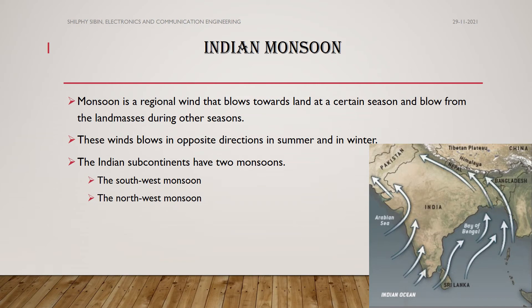In another video, we will talk about the Indian Monsoon. The Monsoon is a regional wind that blows towards land at a certain season and blows from the landmass during another season. It is a region-based wind, and these winds blow in opposite directions in summer as well as in winter.